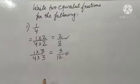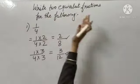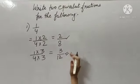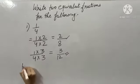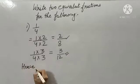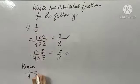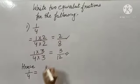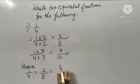So in this way I was supposed to find only 2 equivalent fractions and these 2 I got. Hence 1 upon 4 is equal to 2 upon 8, which is equal to 3 upon 12.